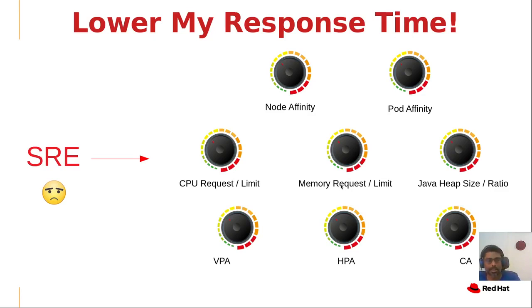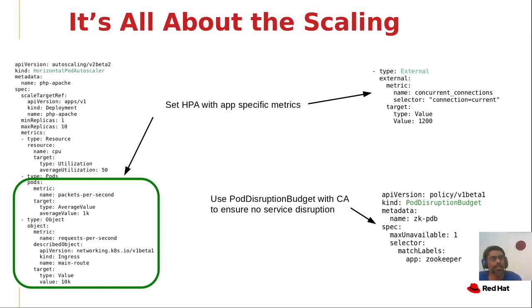Now that we know requests and limits are crucial to performance, you might ask: how do I arrive at the optimal values accurately? The vertical pod autoscaler can help, but I suggest using the Cruise tool, which I'll talk about in a minute. Application performance depends a lot on how the app is scaled, and this is where setting the right policies for the horizontal pod autoscaler is very important. Try to use app-specific metrics to set up the HPA as much as possible — using just average CPU utilization, for example, might not be the best approach. When a GC is triggered in Java, this might cause a new pod to be instantiated instead of when actual load is increased.